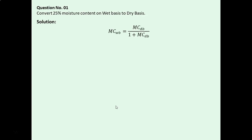For the solution, we will be using this formula: MCWB equals MCDB divided by 1 plus MCDB.